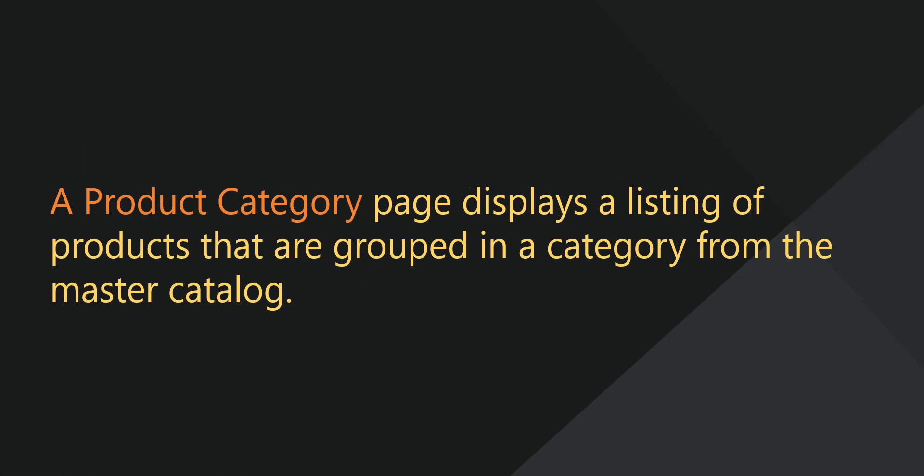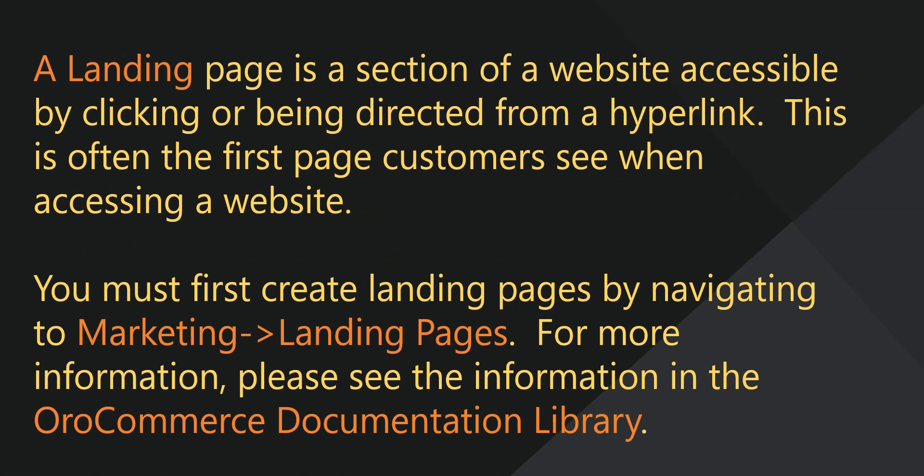A product category displays a listing of products that are grouped in a category from the master catalog. A landing page is a section of a website that's accessible by clicking or being directed from a hyperlink. Often this is the first page customers see when accessing a website. In order to add a landing page as content, you must first create a landing page in the Marketing Landing Pages section. For more information, please see the Landing Pages section of the OroCommerce Documentation Library.